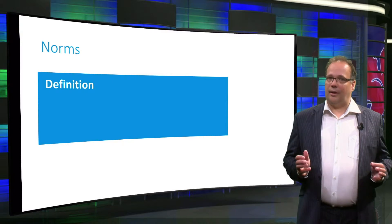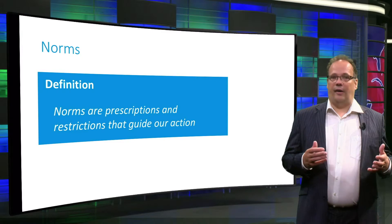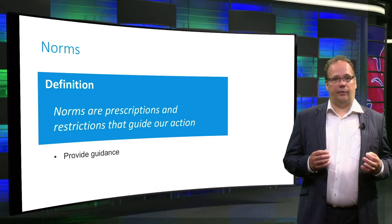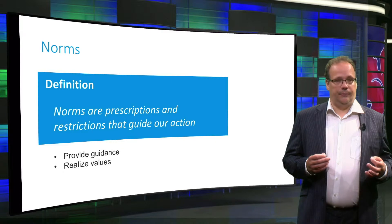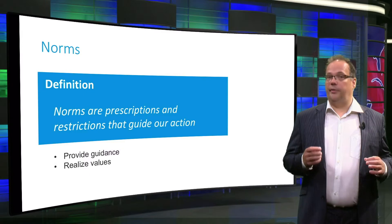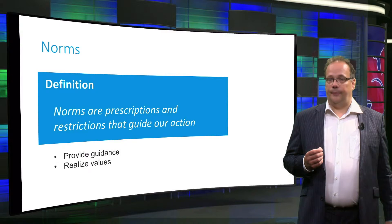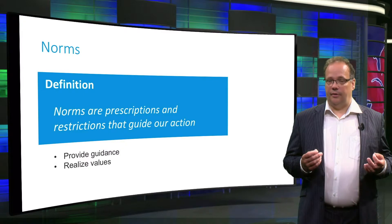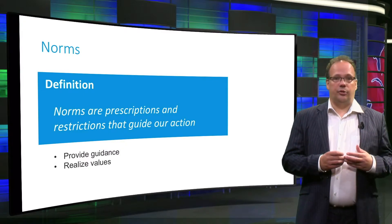Norms are prescriptions and restrictions that guide our actions. They provide guidance about what actions and goals should or should not be part of the design process. Norms help to realize values. Examples of norms are principles and expectations like "you should be honest" or "you should not waste resources." In design, norms are often described as desirable ends we want to achieve, such as "user information should only be shared if users have consented to it."